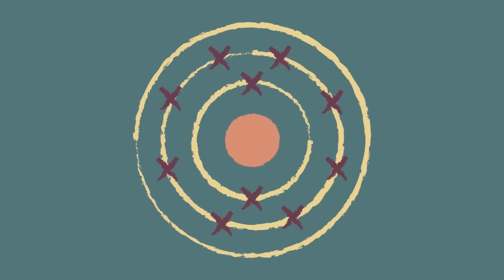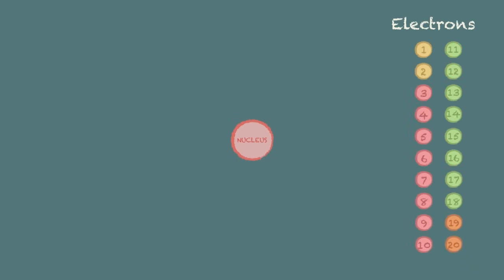All you need to know is how many electrons can occupy each shell and at this level you only need to know the rules for the first 20 elements. The maximum numbers are as follows.